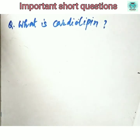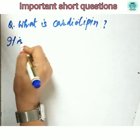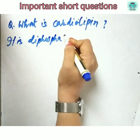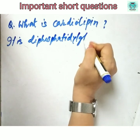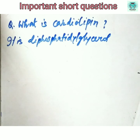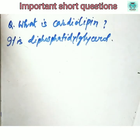Moving to Cardiolipin: what is cardiolipin? It is diphosphatidylglycerol. It is actually formed from phosphatidic acid present in the mitochondria.